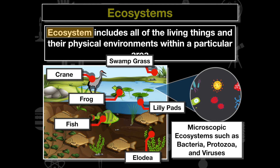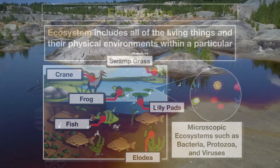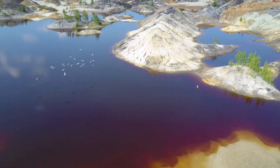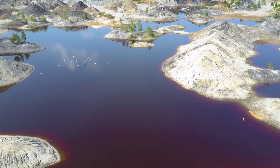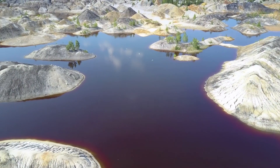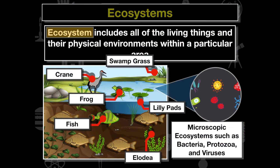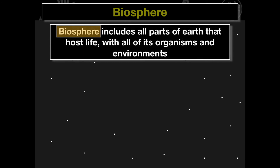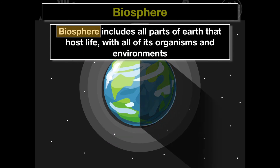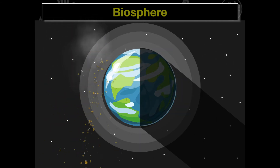Ecosystem ecology involves studying living and non-living components of a system together. Ecologists can reveal patterns in energy or nutrient flow controlled by living or non-living factors. For example, an ecosystem ecologist studying the disappearance of the golden toad would consider not only living things but also weather, climate, and water availability affecting whether those toad populations are increasing or decreasing. The biosphere includes all parts of earth that host life, with all its organisms and environments.